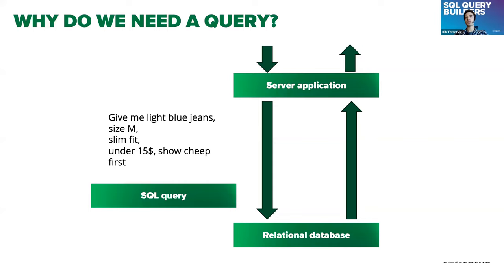A customer might request light blue jeans, size M, slim fit, under $15, sorted cheapest first. Here we have clearly defined filters. A join may be applied as well — maybe a customer would like to see something like 'show me jeans that are popular with other customers.' Some complications may arise when working with relational databases and SQL queries.